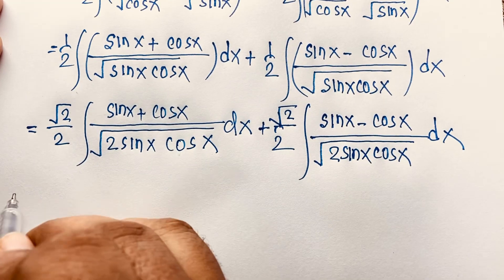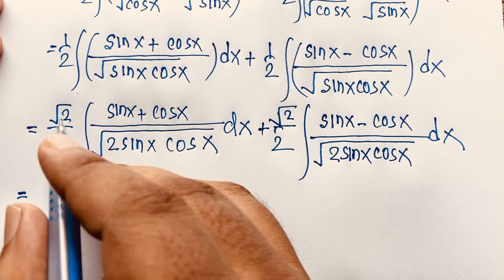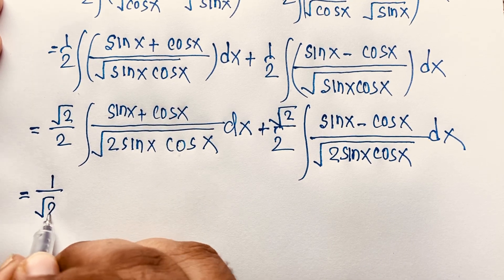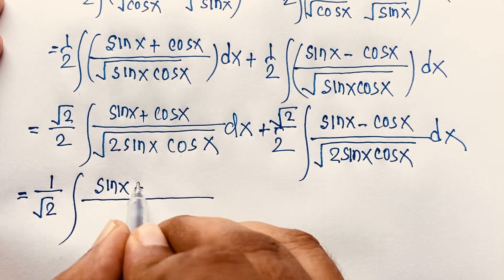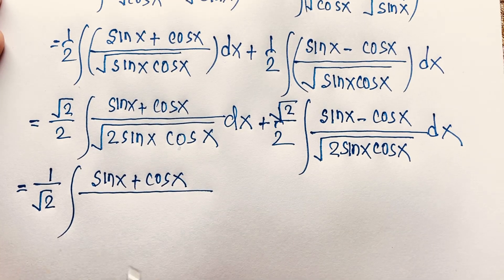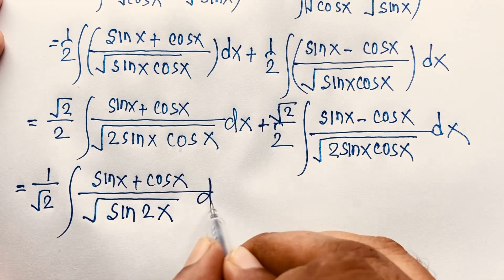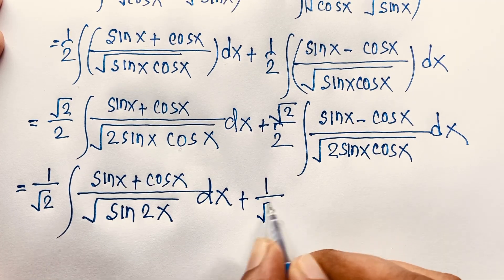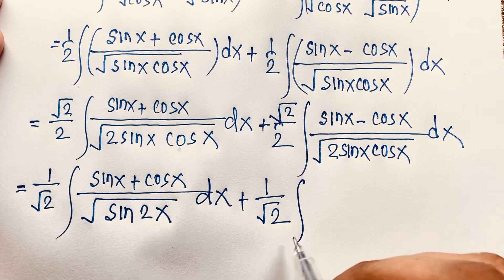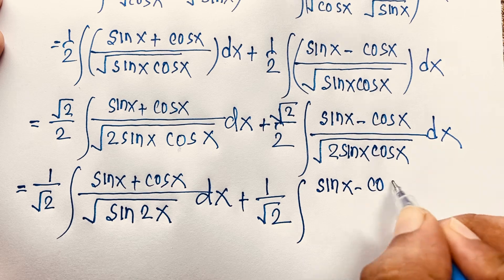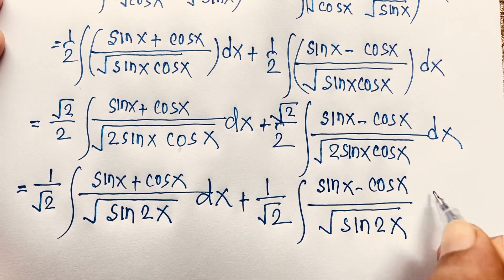After simplification, we find 1 over square root 2 times integral of (sin x + cos x) over square root(sin 2x) dx, plus 1 over square root 2 times integral of (sin x − cos x) over square root(sin 2x) dx. Here the denominator square root(sin 2x) appears in both integrals.